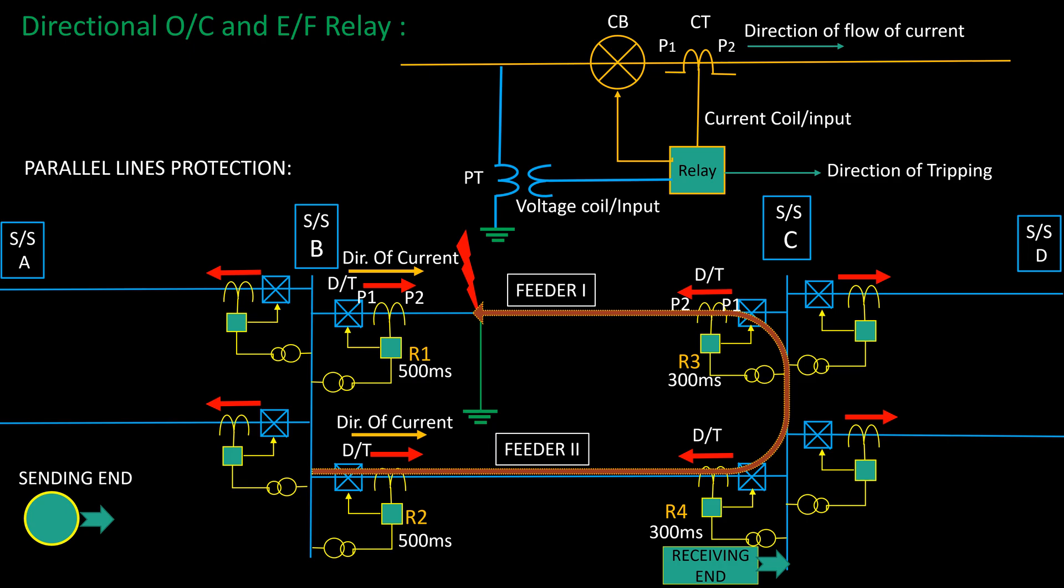This can be prevented by setting a more time discrimination at sending end relays with respect to receiving end. Therefore, time setting at relays R1 and R2 will be kept likely 500 milliseconds, and that of relays R3 and R4 is 300 milliseconds for such time discrimination.